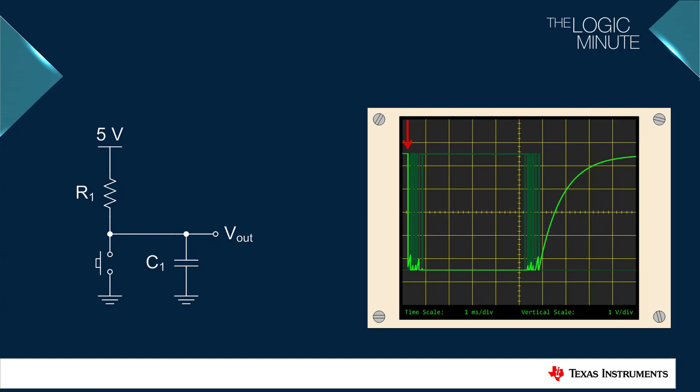To be absolutely certain that the signal is debounced in both directions, a second resistor can be added. Here you can see that the bounces are filtered out of both the rising and falling edge.